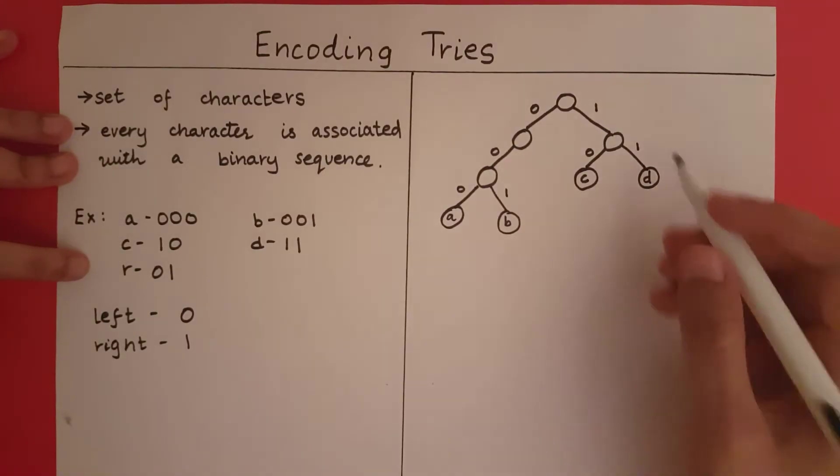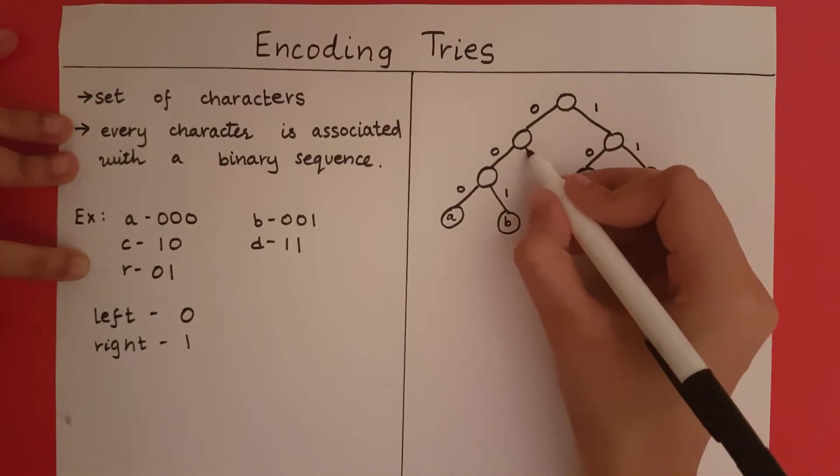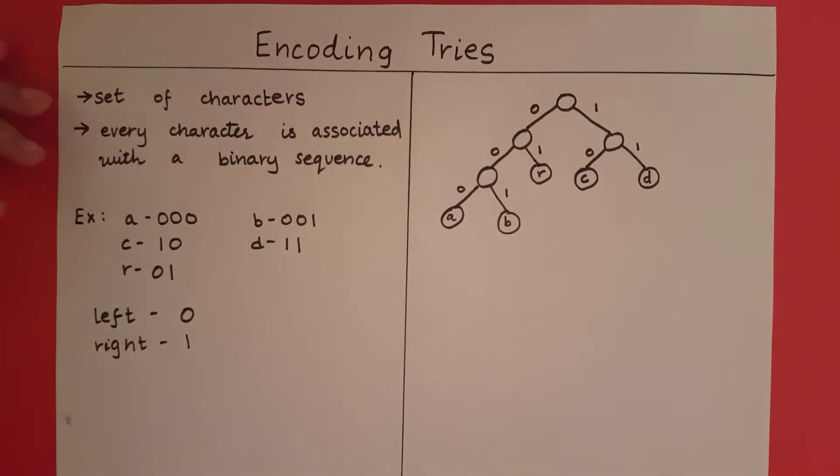As for R, I have a 0 first and then I have to have a 1, so I will go right from here. So this is how you construct the trie for this set of alphabets and binary sequences.